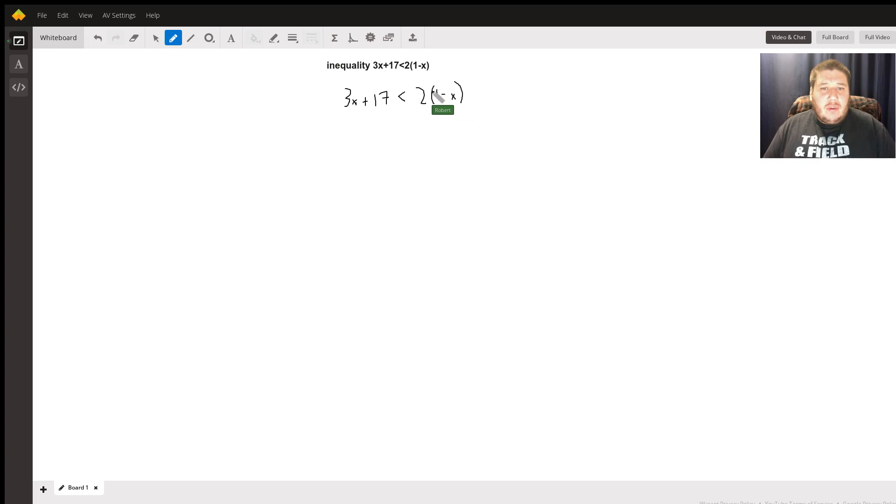So first off, I'm going to distribute this 2 into this function of 1 minus x. So I have 3x plus 17 is less than 2 times 1, which is going to give me 2, and 2 times negative x is going to give me negative 2x.